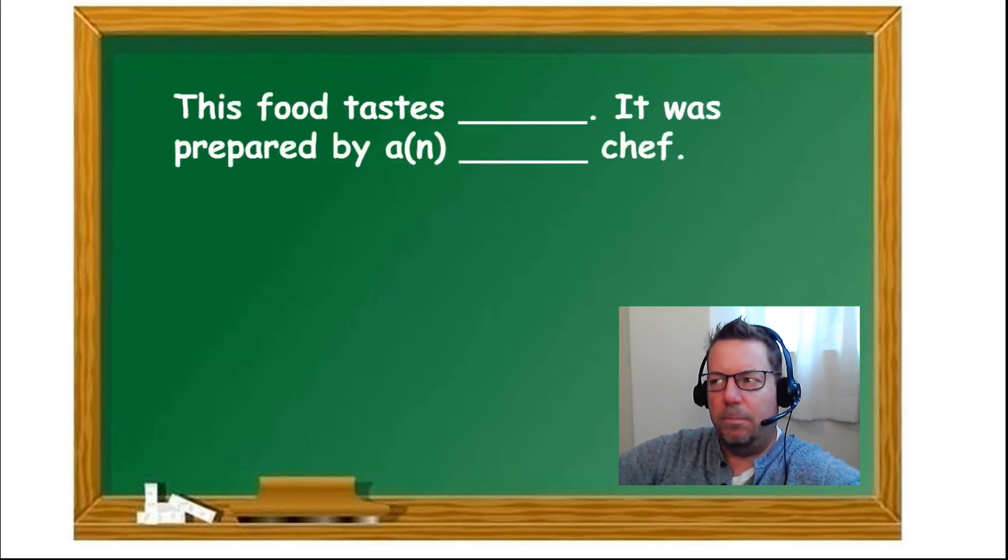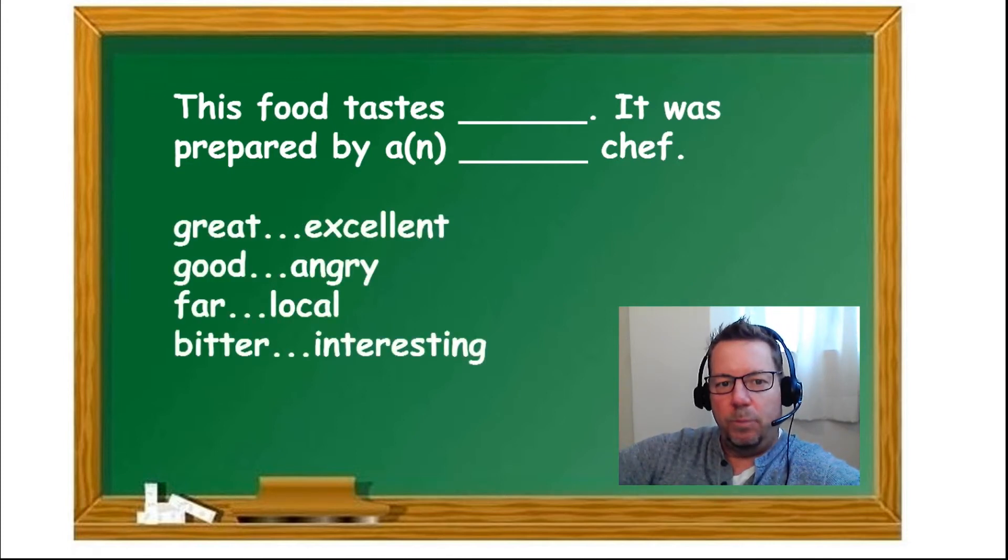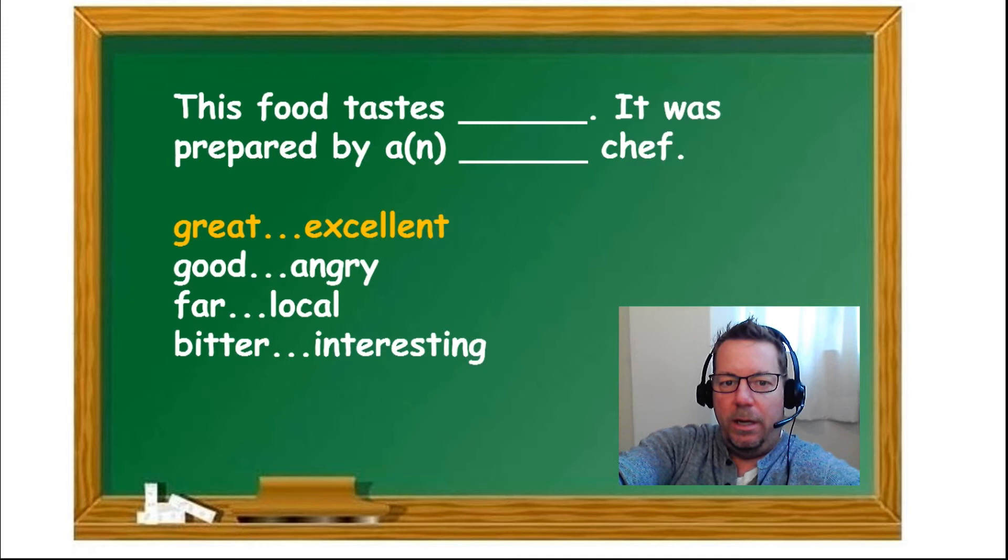Next, this food tastes blank. It was prepared by a blank chef. The food tastes great, prepared by an excellent chef. The food tastes good, prepared by an angry chef. Food tastes far, prepared by a local chef. Local chef fits. Far does not fit. Food tastes bitter, prepared by an interesting chef. So the only one that really makes sense is the food tastes great. It was prepared by an excellent chef.